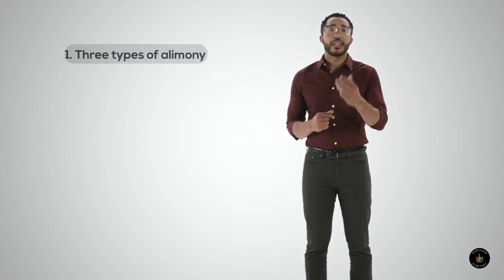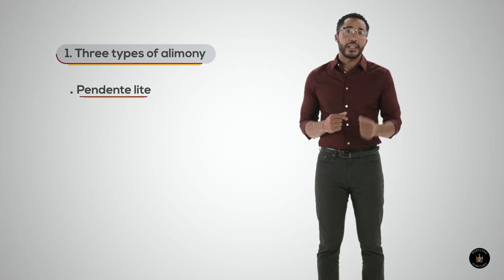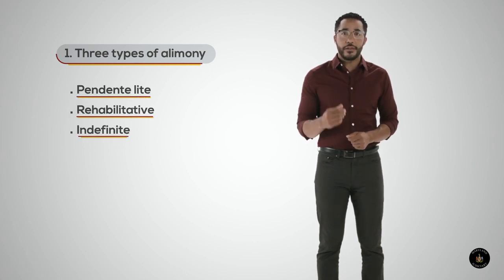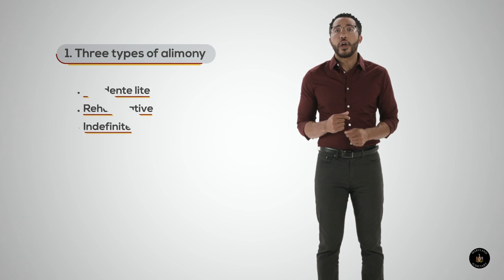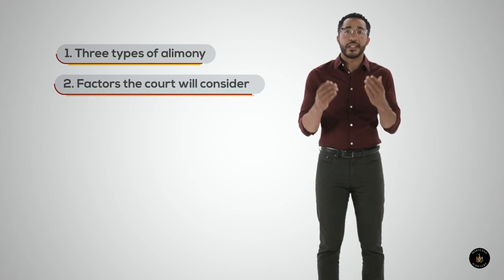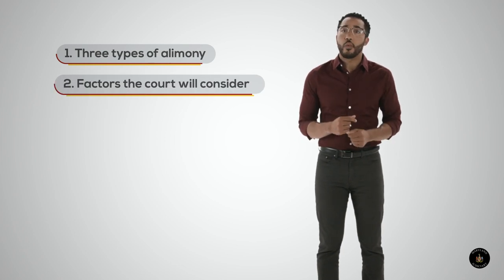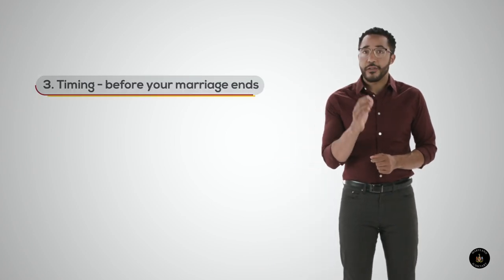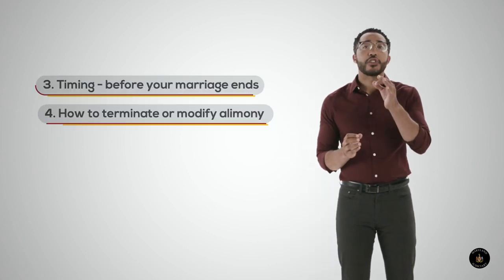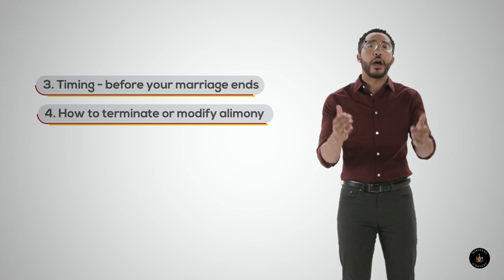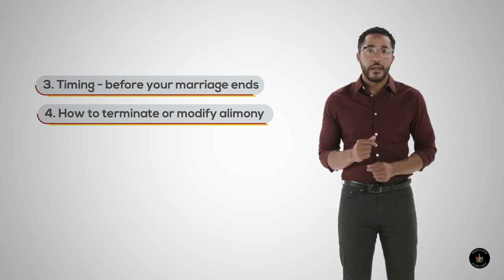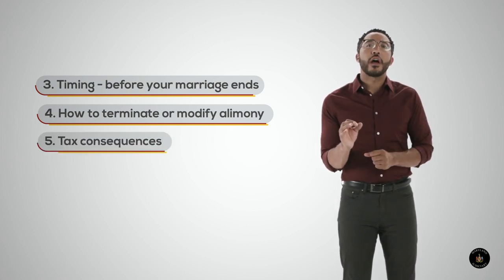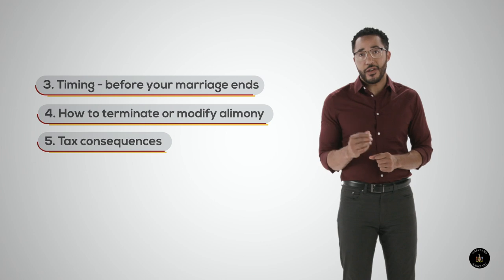We will talk about three types of alimony: pendente lite, rehabilitative, and indefinite. We'll also discuss factors the court must consider before awarding alimony in a divorce case. We'll go over the importance of timing when asking for alimony and examine how to terminate or modify alimony cases. Finally, we will briefly talk about some tax consequences.